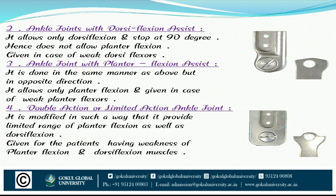The third is the ankle joint with plantarflexion assist, done in the same manner but in the opposite direction — it allows only plantarflexion and is given in cases of weak plantarflexion. The fourth is the double action or limited action ankle joint, modified to provide limited range of both plantarflexion and dorsiflexion, given for patients with weakness of both.